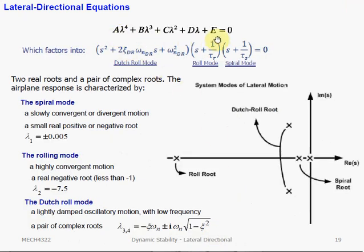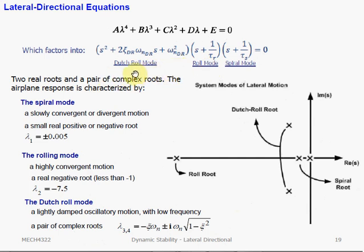From the characteristic equation, if we factor out some of the terms appropriately, we can see that we have three modes: one second order characteristic equation describing the Dutch roll, and two first order characteristic equations, each describing either the roll mode or the spiral mode.